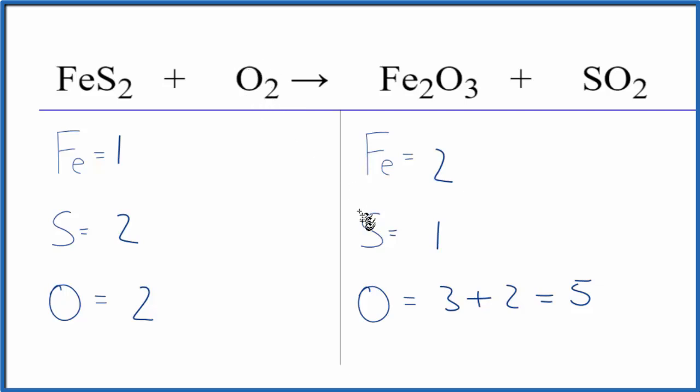I want to have O2. So let's fix the iron atoms first. We just put a 2 in front of the FeS2, so 1 times 2. That balances the irons.